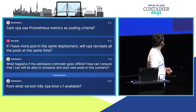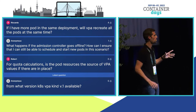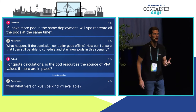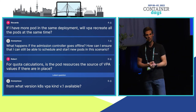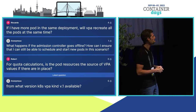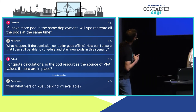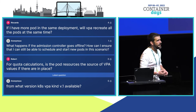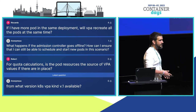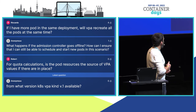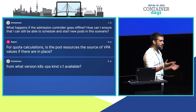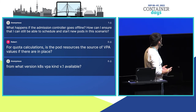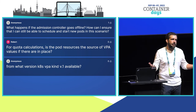Can VPA use Prometheus metrics as scaling criteria? Yes — by default VPA uses Kubernetes CPU and memory metrics, but you can also add Prometheus and grab information from it. There are community-developed plugins that allow scraping information from Prometheus. If you have multiple pods in the same deployment, will VPA recreate all pods simultaneously? It depends on what you define in your controller. If you set a Pod Disruption Budget (PDB), VPA will respect it — because VPA doesn't directly kill pods; it instructs the controller to change behavior, and the controller decides how to recreate objects.